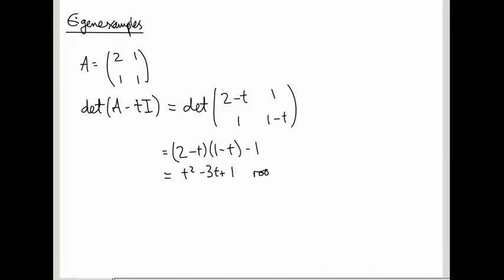So the roots of this polynomial are 3 plus or minus square root of b squared, so that's 9 minus 4ac, so that's minus 4 over 2. In other words, that's 3 plus or minus root 5 over 2.